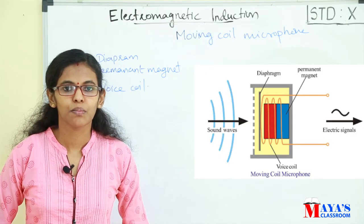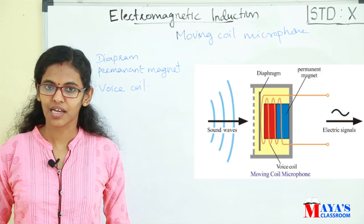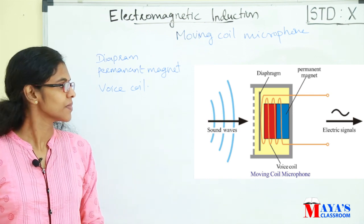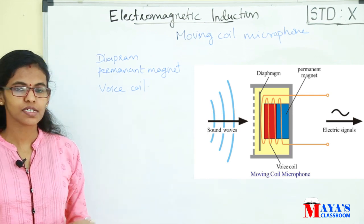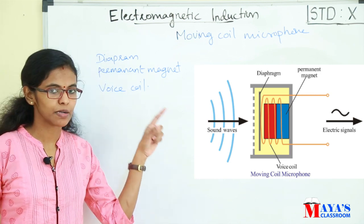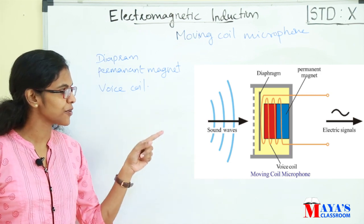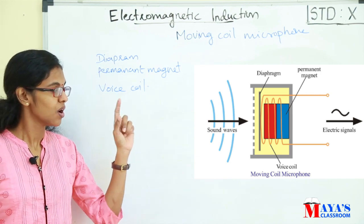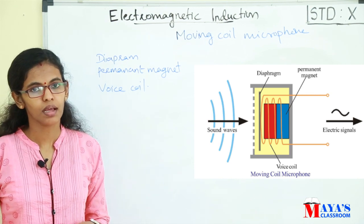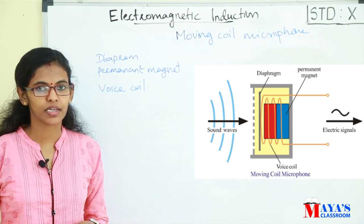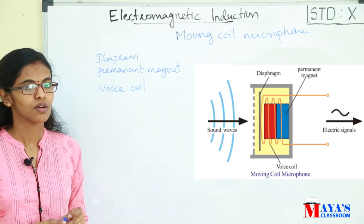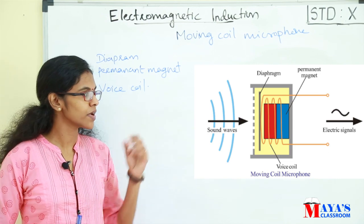Next is the moving coil microphone. The parts of a moving coil microphone are the diaphragm, the permanent magnet, and the voice coil.